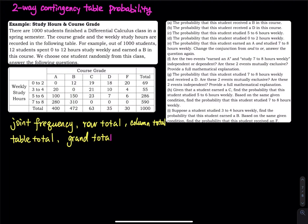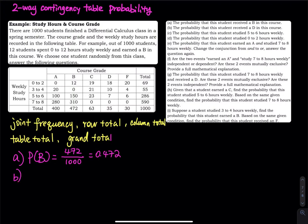Part A: Find the probability that a student receives a B in this course. That is the total number of Bs — the column total for B — which is 472, divided by the grand total of 1,000. That equals 0.472. Part B: Find the probability of a D. How many people got a D? 35 divided by the grand total. That equals 0.035.